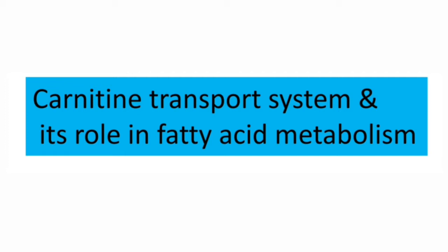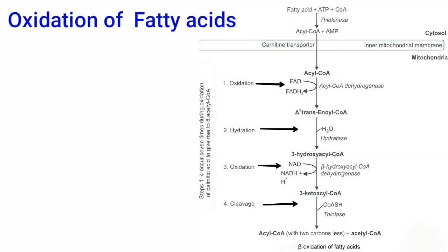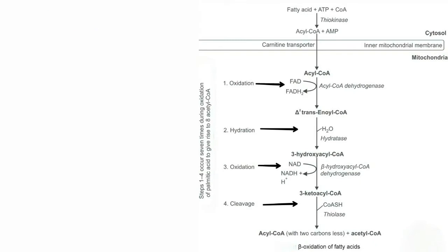The mechanism used to extract energy from fatty acids is oxidation. The major type is beta oxidation of fatty acids. The enzymes of beta oxidation are present in the mitochondria, whereas fatty acids are present in the cytosol. The problem is that long chain fatty acids cannot cross the mitochondrial membrane.